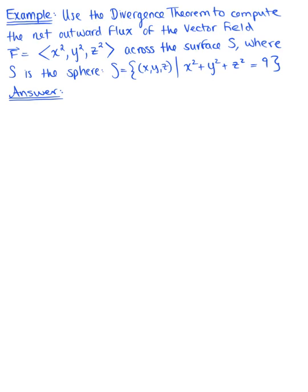Use the divergence theorem to compute the net outward flux of the vector field defined by the components x squared, y squared, z squared across the surface S, where S is the sphere centered at the origin with a radius of 3.